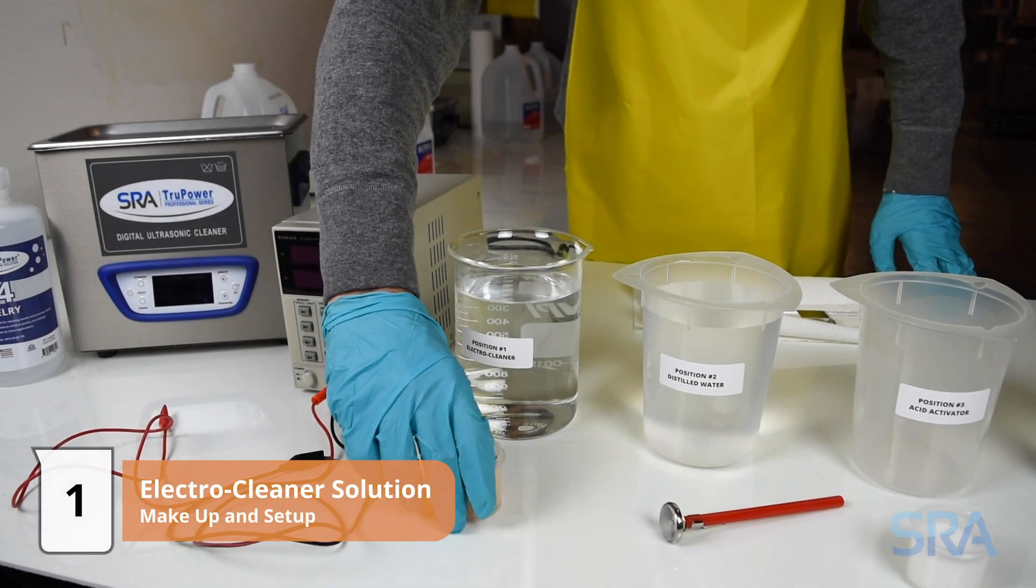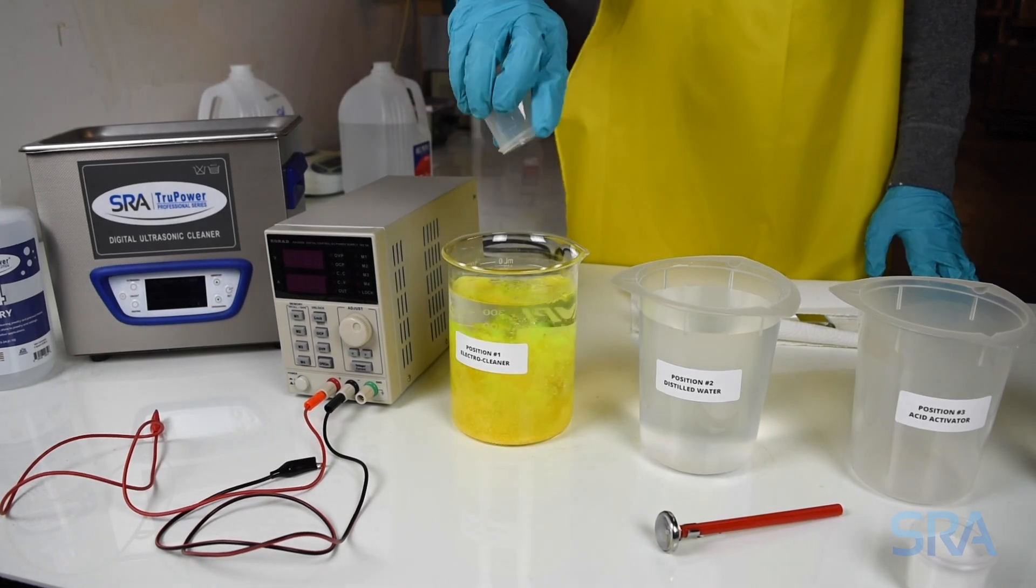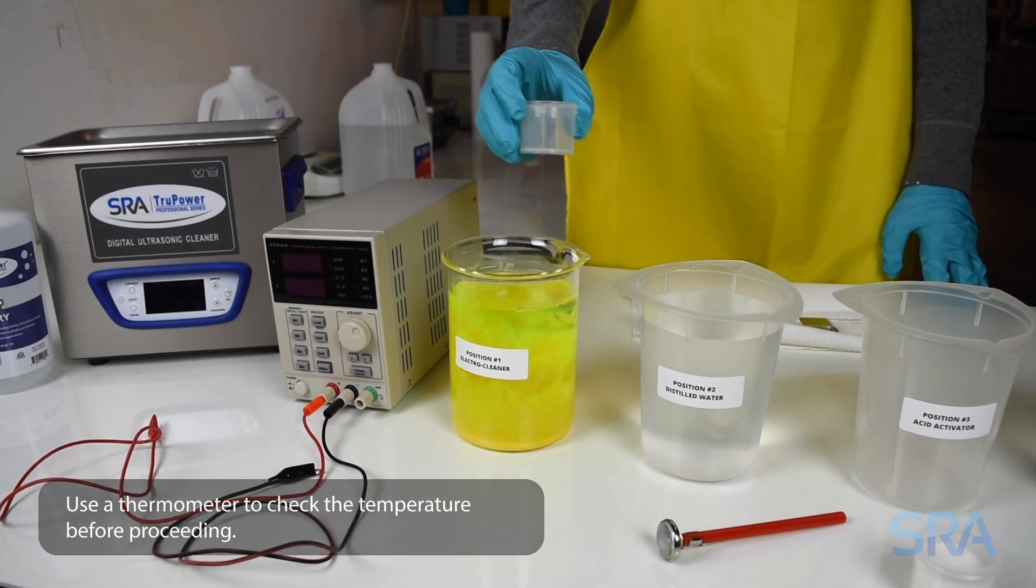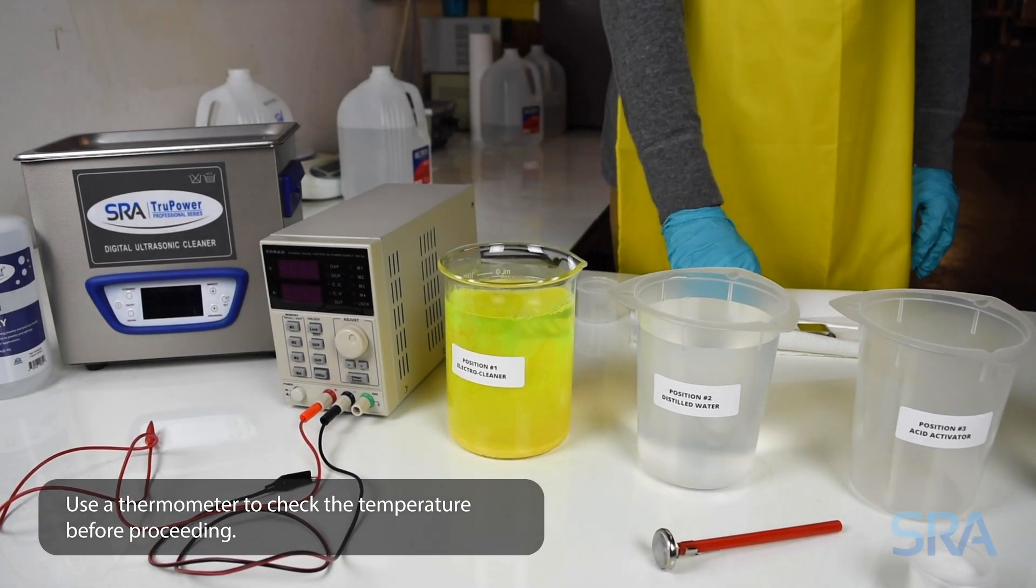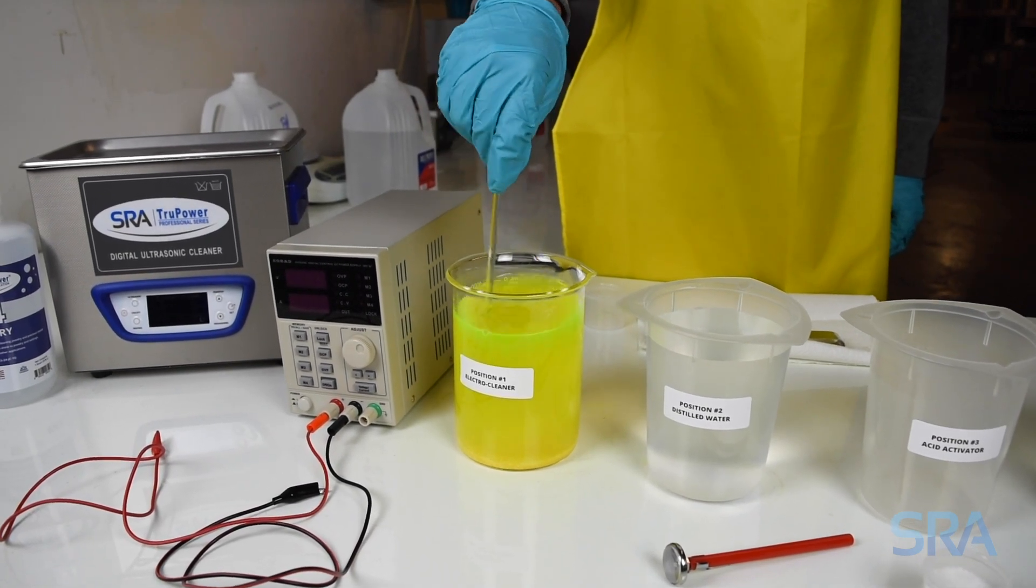The first step is to pour 40 grams of electro cleaner soap into a one liter beaker of distilled water. This water has been preheated to 125 degrees Fahrenheit. Mix the solution with a glass rod until completely dissolved.